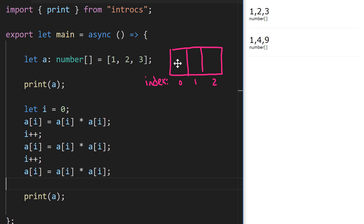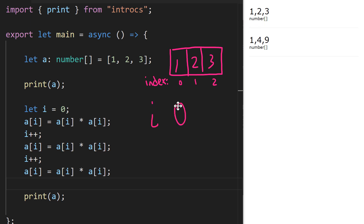We set up our number array `a` once again with values 1, 2, and 3 at indices 0, 1, and 2. We print out `a`, causing those values to print. Then we reach the declaration of `i`, which is initialized to zero. So here we're saying `a[0] * a[0]` is assigned back to `a[0]`.